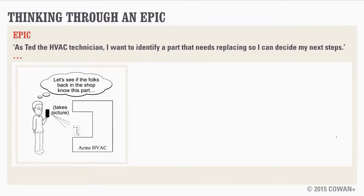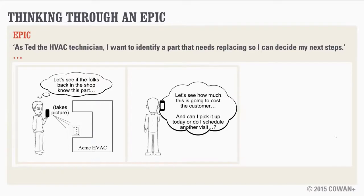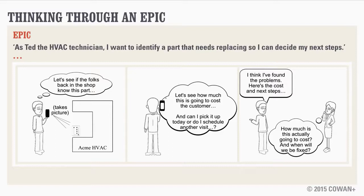The third case is that he's stuck — he doesn't know what the part is. One thing the H&H team saw technicians doing out in the field was snapping a photo with their phones and emailing colleagues back in the office to get help identifying the part. This concludes with Ted needing to know how much the part costs and how soon he can get it, so he can talk with his customer about what they want to do next and how soon he can fix their HVAC. Storyboards are not only a good way to think through your ideas but to bring them to life for your collaborators.